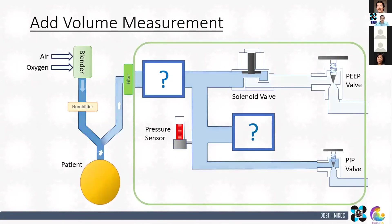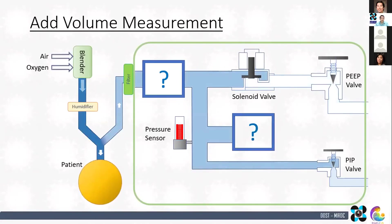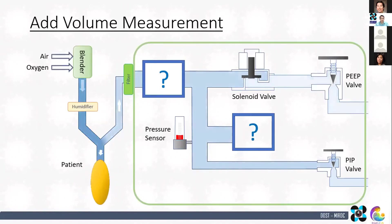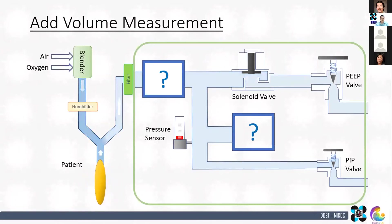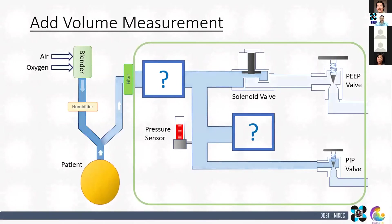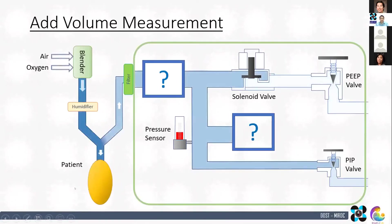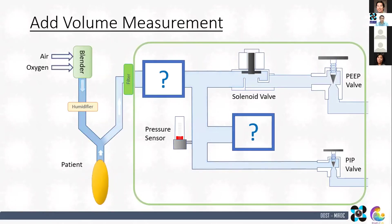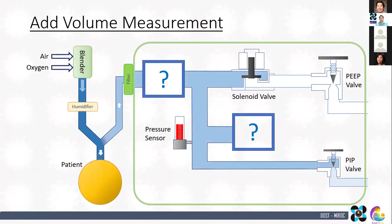Volume measurement and volume control operation were the main challenges in the development of the OSHA event II. I cannot disclose how exactly we did it due to intellectual property concerns, but it was a matter of choosing the appropriate sensor and feeding the data to the PLC. After which, everything became a programming activity.